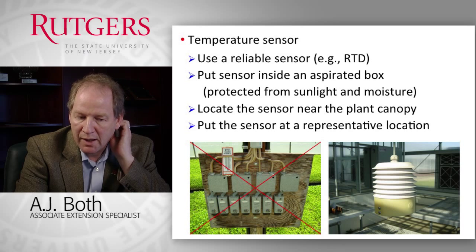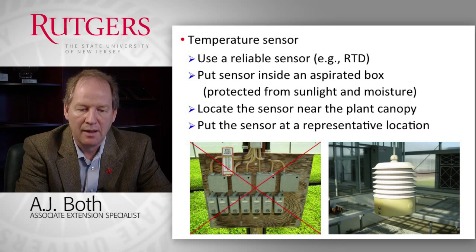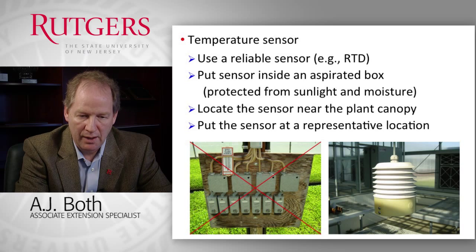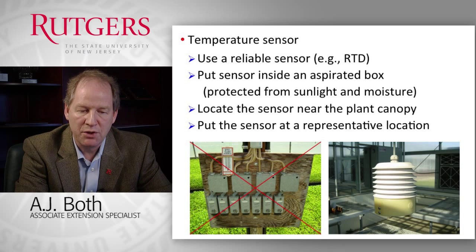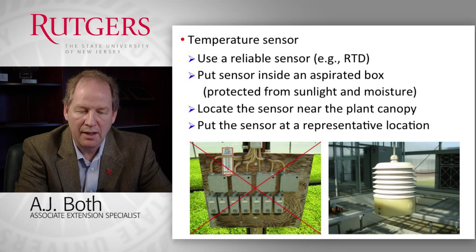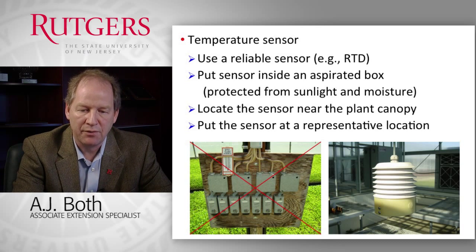The picture on the bottom shows you what not to do. On the left-hand side you see a row of thermostats that are not aspirated and are exposed to greenhouse conditions, installed a distance away from the crop. If the sun comes out and shines directly on these sensors, they give you a false reading. On the right-hand side you see a proper installation: a little aspirated box with gills on the side and a fan at the bottom drawing air through the gills, past the sensor, and then out the bottom of the sensor housing, so you get a good representative measurement in your system.